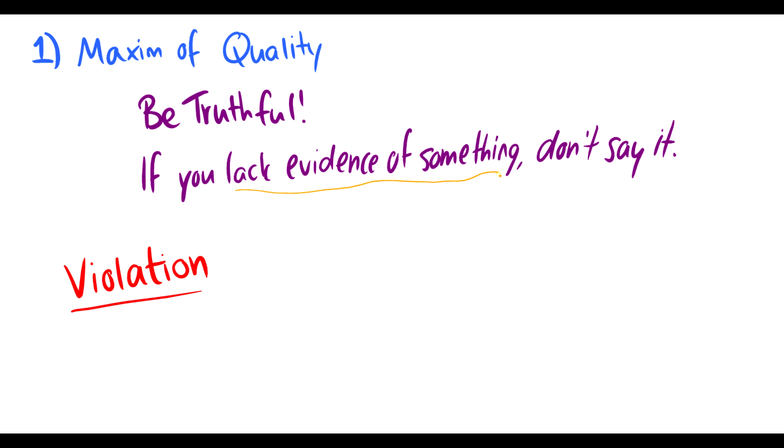Now, what if we lack evidence of something? For instance, every sentence in the universe is actually made up of English words. Now, this could theoretically be true, but we don't have evidence for it, so why would we say it? Or for instance, what about a concept in mathematics? That every factorial can be written as a polynomial. I don't know. Do you know? You probably don't know, so why would you say it? And that is violating the maxim of quality.